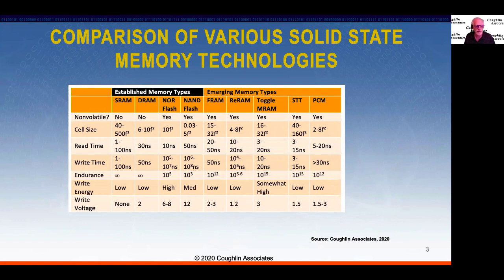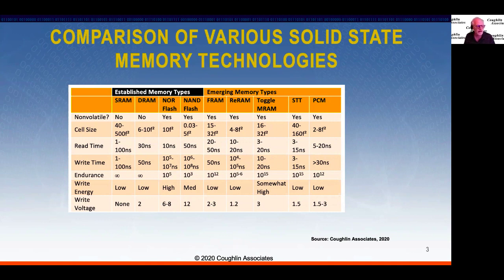The emerging memories we're talking about are ferroelectric random access memory (FRAM), resistive random access memory (ReRAM or RRAM), toggle-mode MRAM, spin-transfer torque MRAM, and phase change memory. That last one includes the 3D XPoint memory product that Intel and Micron developed, currently sold by Intel as Optane memory technology in both SSDs and DIMM memory modules. The table compares properties like non-volatility, cell size, read time, write time, endurance, write energy, and write voltage.